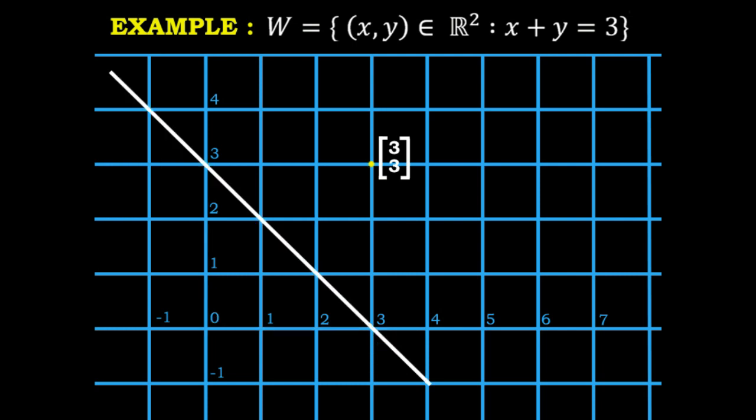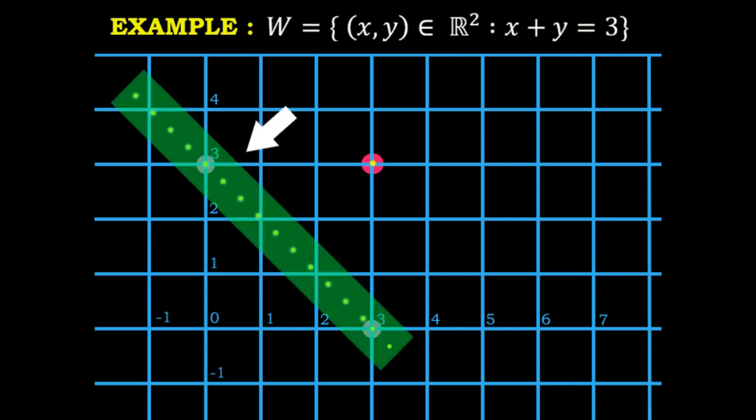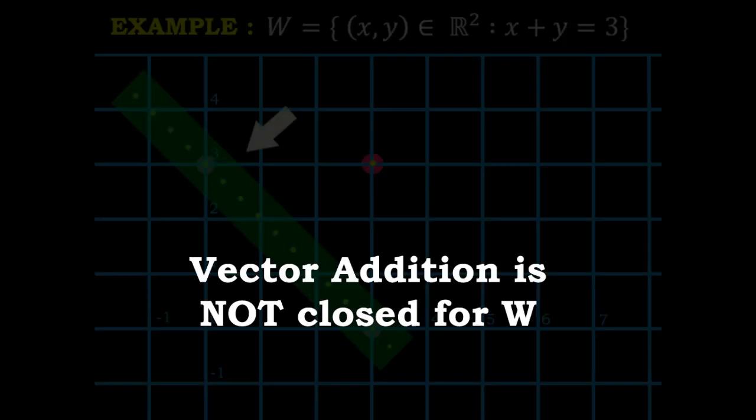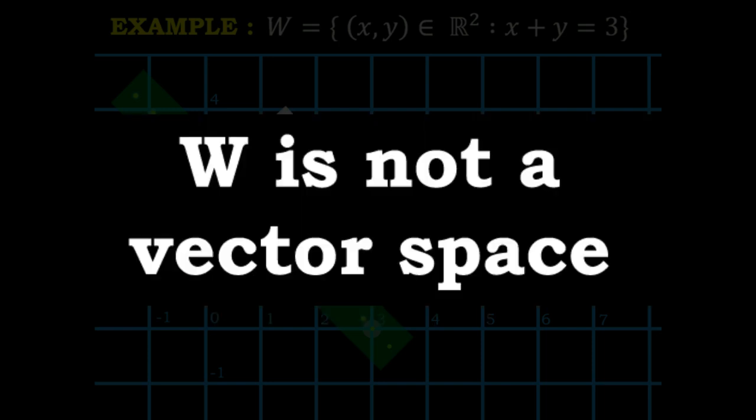The sum of these two vectors gives us a third vector. This new vector, however, is not a part of the line that represents the given set. In other words, the sum of any two random vectors in the set may not be a part of the given set of vectors. So vector addition for the given set is not closed, and therefore the given set does not form a vector space.